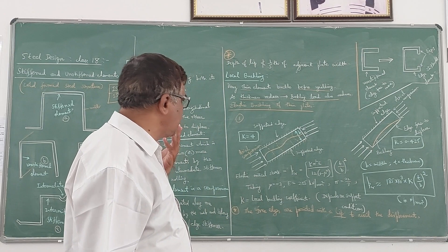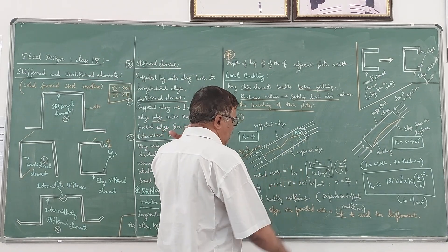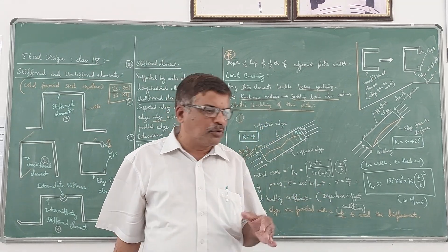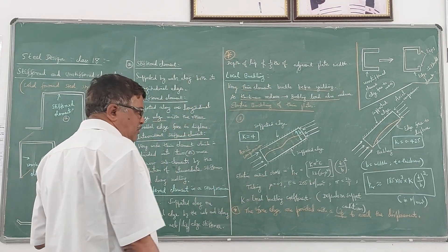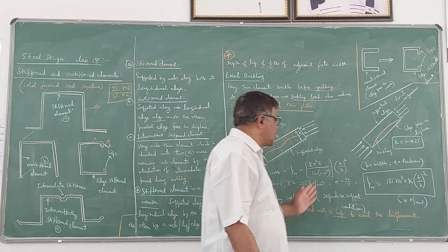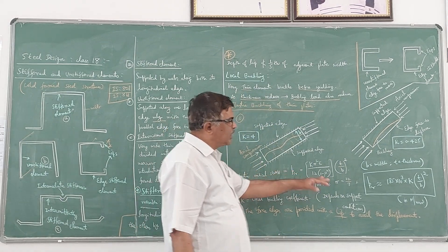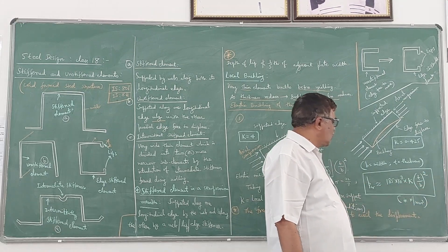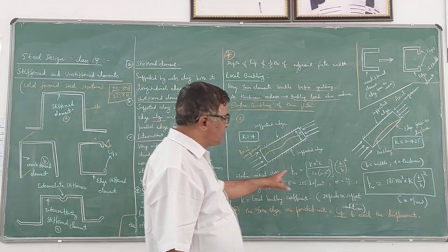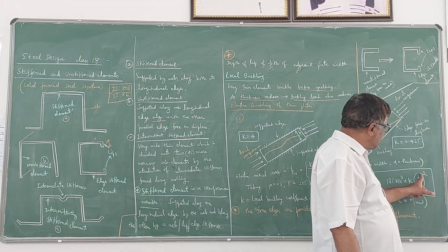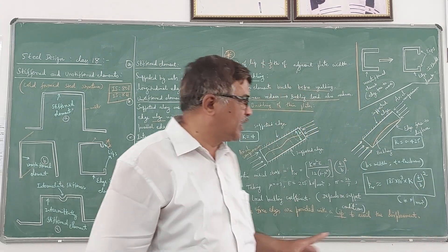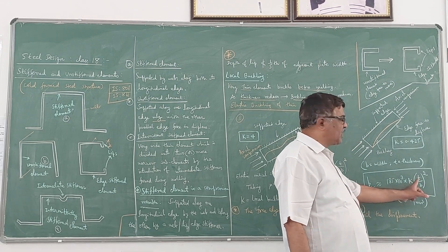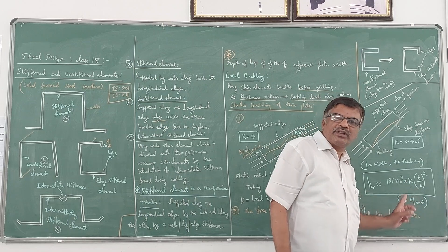If you substitute the standard values — μ = 0.3 and E = 2.05 × 10⁵ N/mm² — and simplify, you get PCR nearly equal to 185 × 10³ × K × (T/B)². That means this PCR value depends on K as well as the ratio of thickness to width. As thickness reduces, PCR value also reduces. As K reduces, PCR value will also reduce.